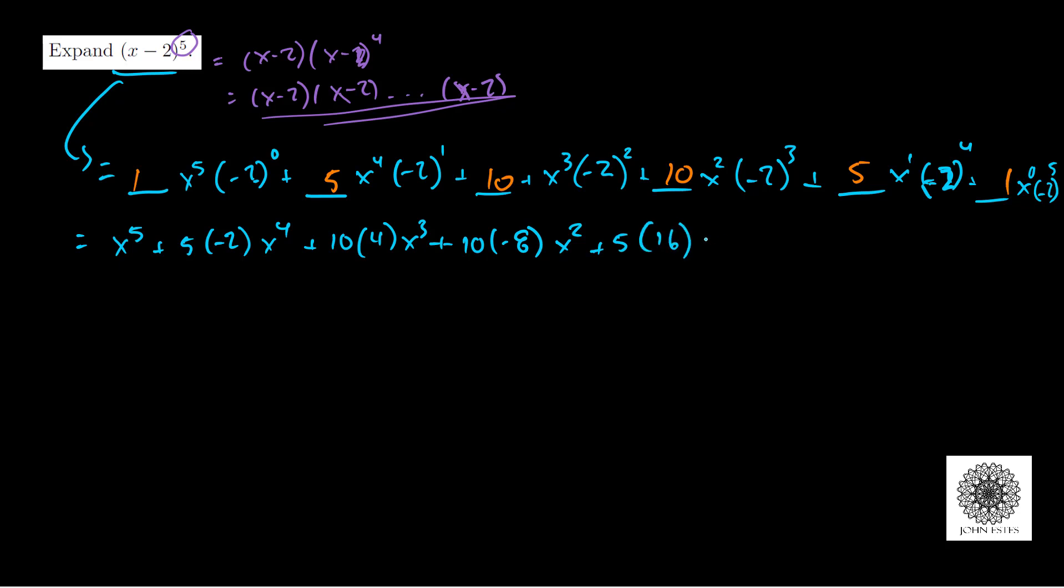Then I have 5 times (-2) to the fourth which is a positive 16, times x to the first power. And then I just have (-2) to the fifth power which is -32. Cleaning up the arithmetic, I have x to the fifth minus 10x to the fourth plus 40x cubed minus 80x squared plus 80x minus 32.